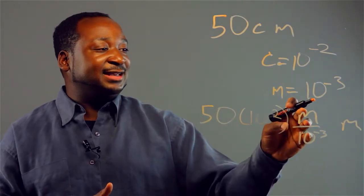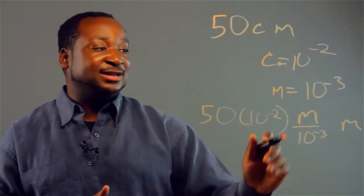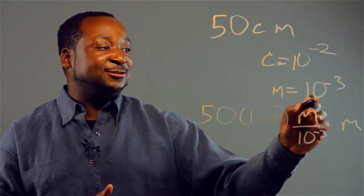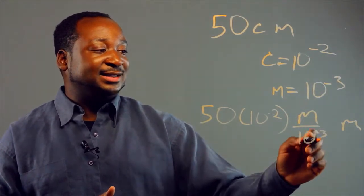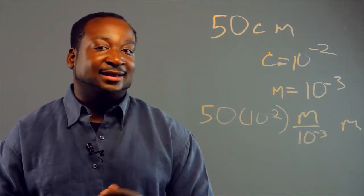Basically, what I did here is I multiplied by 1. M is equivalent to 10 to the negative 3, so m over 10 to the negative 3, that's 1.